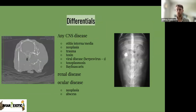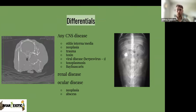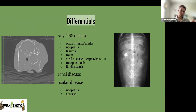Differentials: any CNS disease in a rabbit can cause very similar symptoms. Otitis interna/media can cause a lot of those peripheral vestibular signs. Neoplasia affecting the brain, trauma to the head, different types of neurotoxic toxins, herpes virus, toxoplasmosis, Baylisascaris — stay away from those raccoons. For renal disease, since kidney is one of the main foci of this disease, that's also a differential. You can see severe chronic renal disease with mineralization on both sides. For ocular disease, phacoclastic uveitis is pretty characteristic, but some neoplasias and abscesses might look very similar.